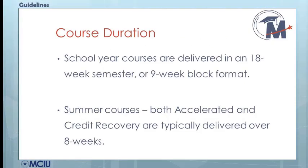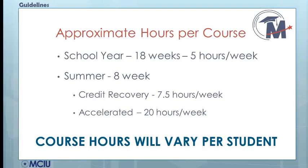School year courses are broken up into Part A and Part B, or Semester 1 and Semester 2. Typically, each semester course is 18 weeks in duration. We also offer block scheduling for 9 weeks, or your school can choose their own start and end dates. For summer courses, both Accelerated and Credit Recovery courses are full-year courses, typically provided in an 8-week format. During a typical school year course, you should plan on spending about 5 hours a week per course. During the summer, Credit Recovery students should schedule 7.5 hours per week, and Accelerated students should schedule 20 hours per week to complete your course on time.